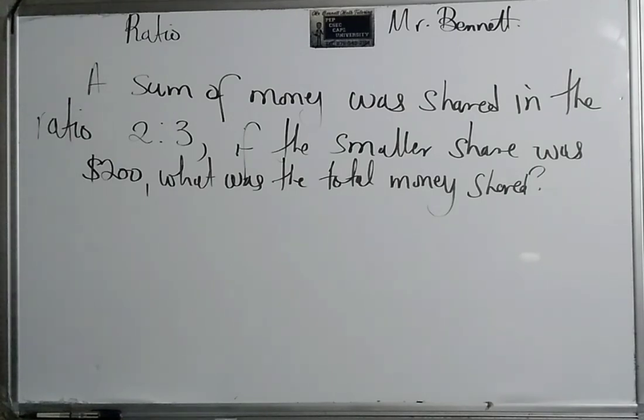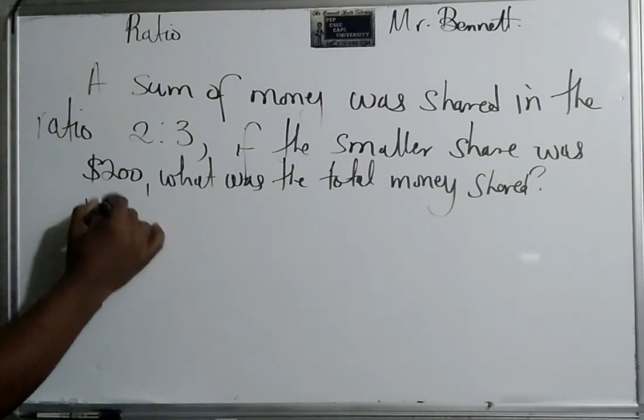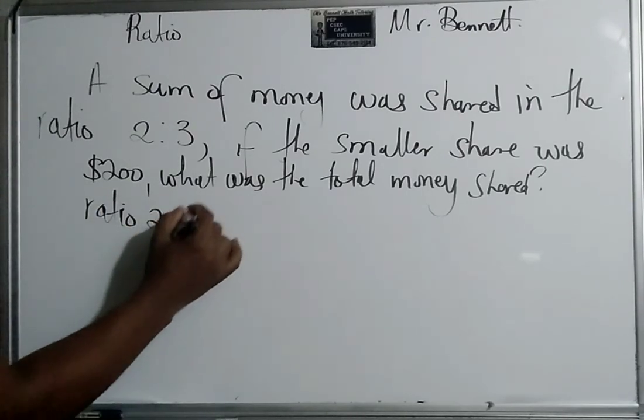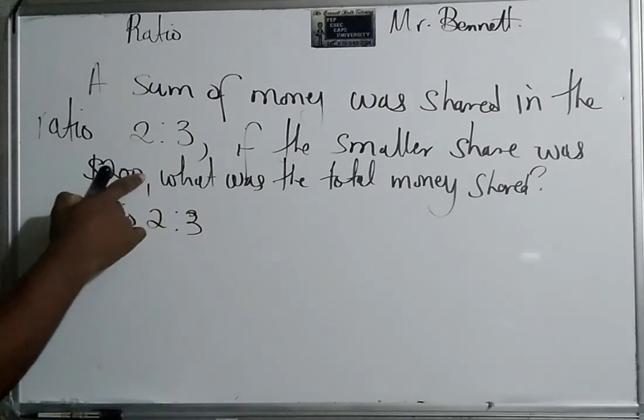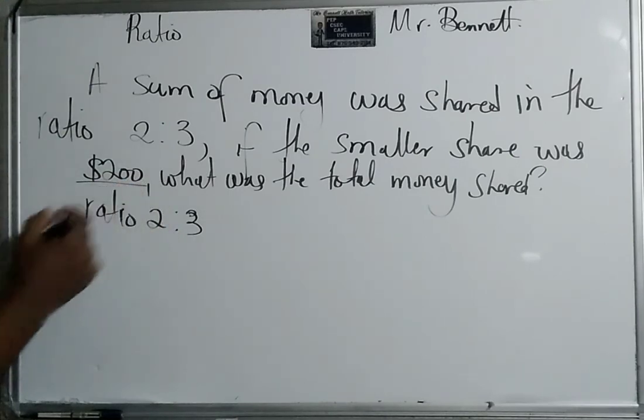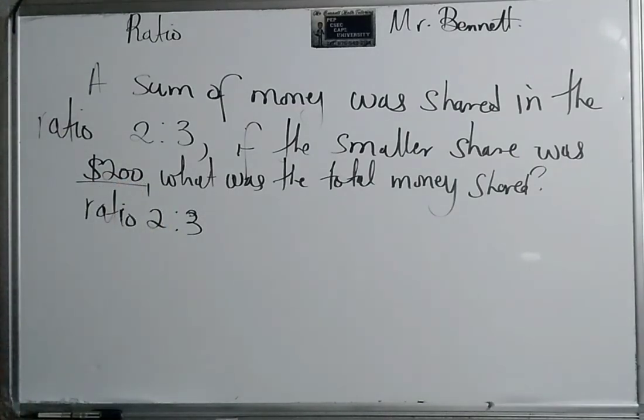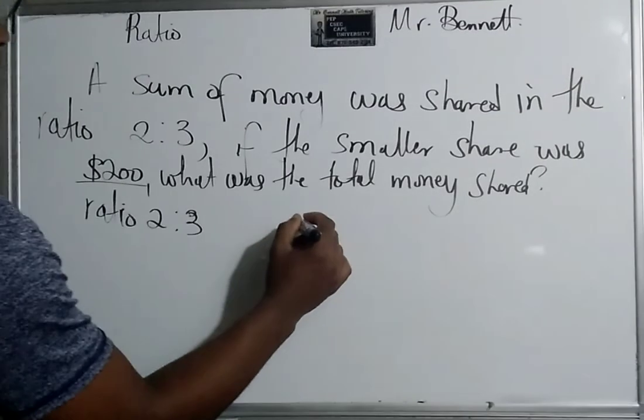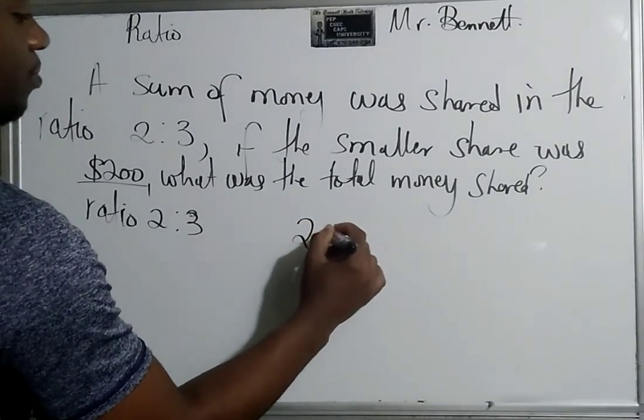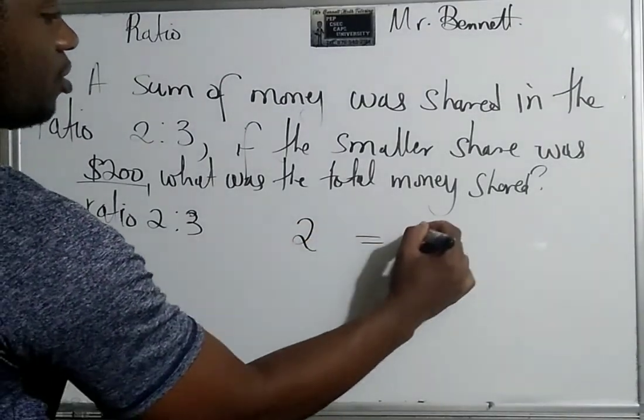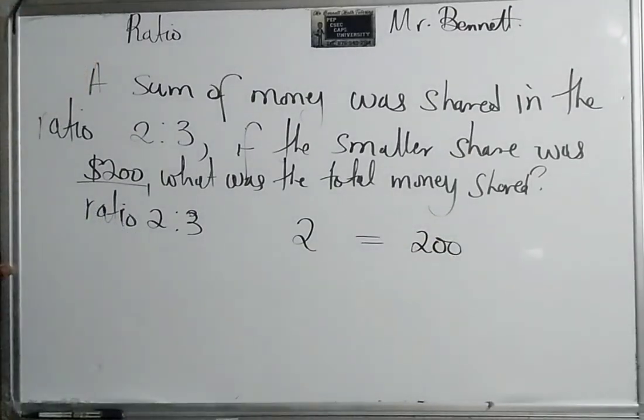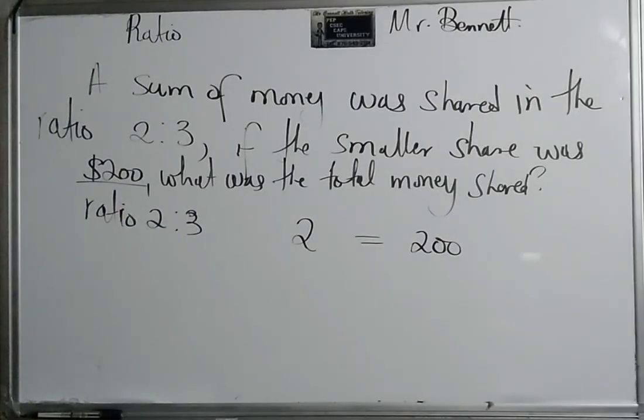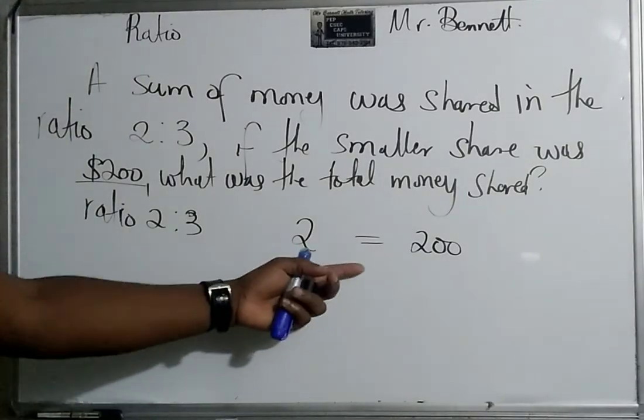So this one is a little bit different because they gave us, they said a sum, we're doing the sum, but they gave us something. They gave us the ratio, and that's 2 to 3, and they gave us something else, two hundred dollars, which is the smaller share. So let's just look at it this way: two shares is equal to two hundred.